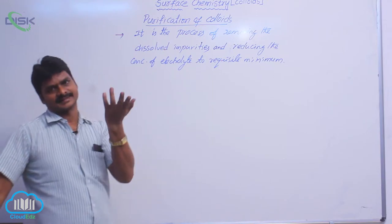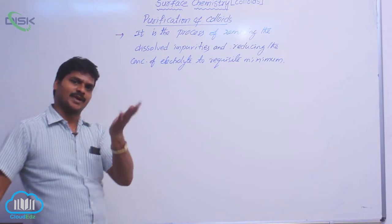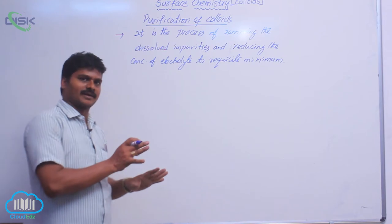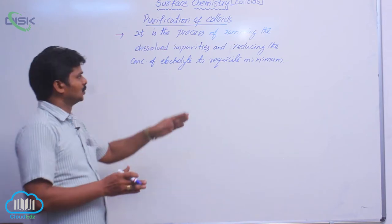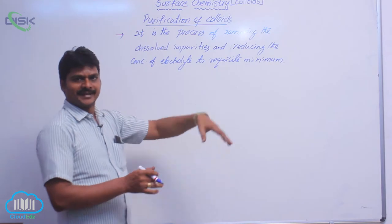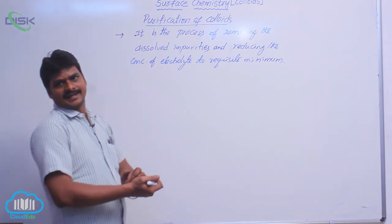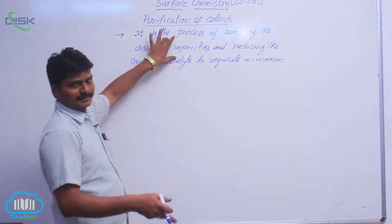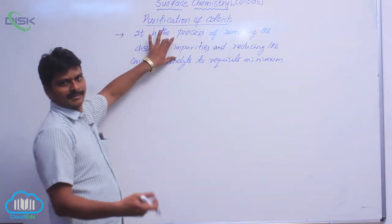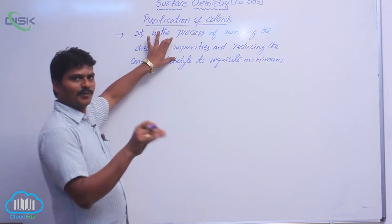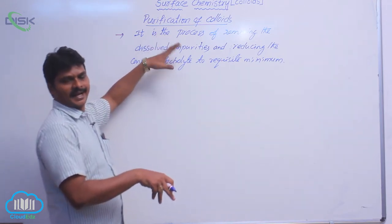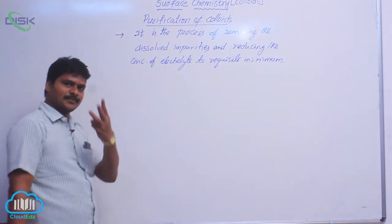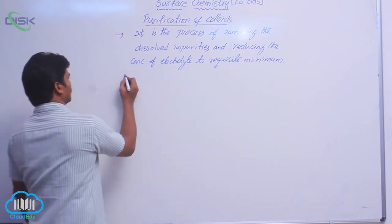If the electrolyte is in excess, the colloidal solution immediately gets coagulated. That is why, to maintain the concentration of electrolyte to a requisite minimum, and to remove any dissolved impurities in the dispersion medium, we use some methods. That method of removal of impurities and reducing the concentration of electrolyte is called a purification method. There are three purification methods mainly — let us see them one by one.